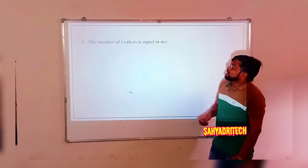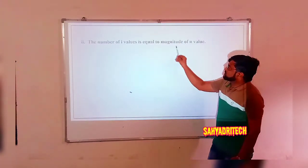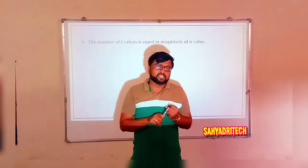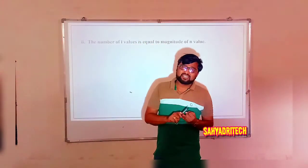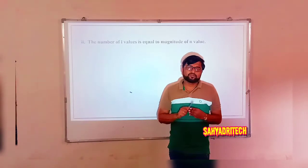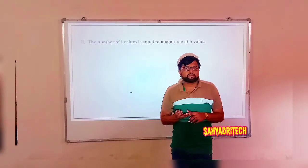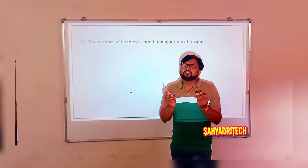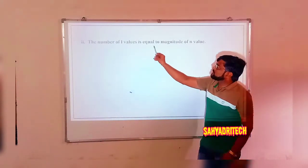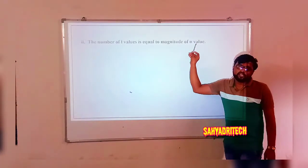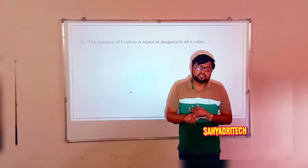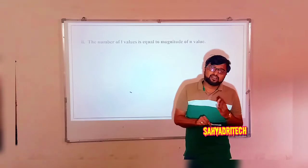The number of l values equals the magnitude of the n value, which also indicates the total number of subshells. First shell has one subshell (1s), second shell has two subshells (2s, 2p), third shell has three subshells (3s, 3p, 3d), and fourth shell has four subshells (4s, 4p, 4d, 4f). So there is a clear correlation between the shell number and the total number of subshells.